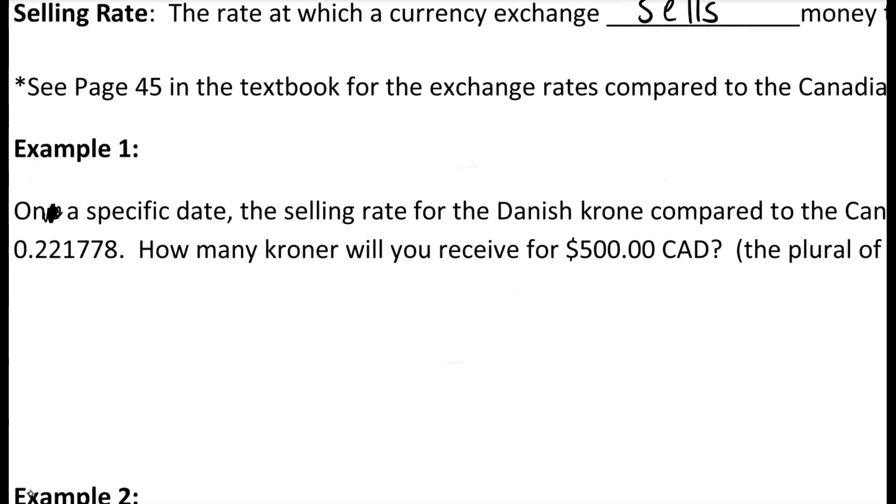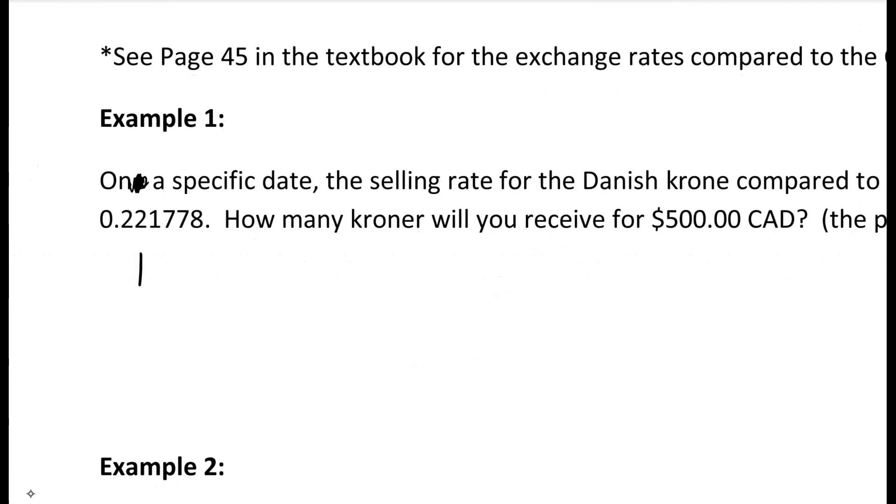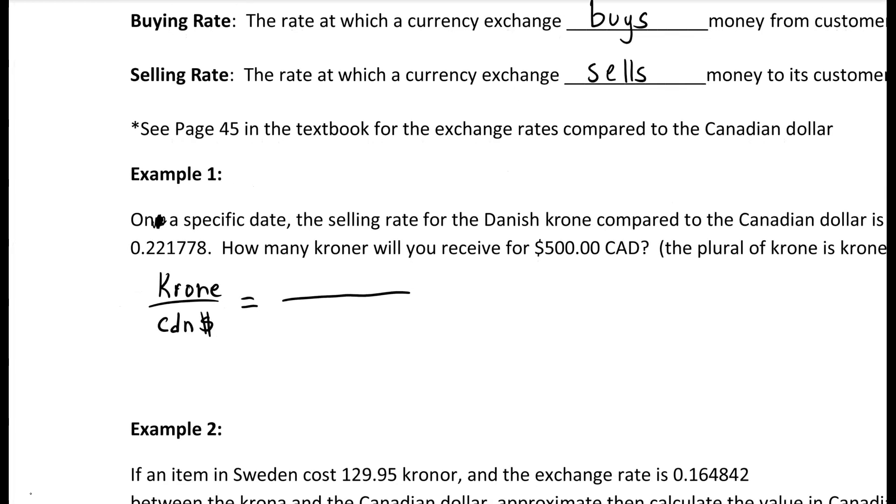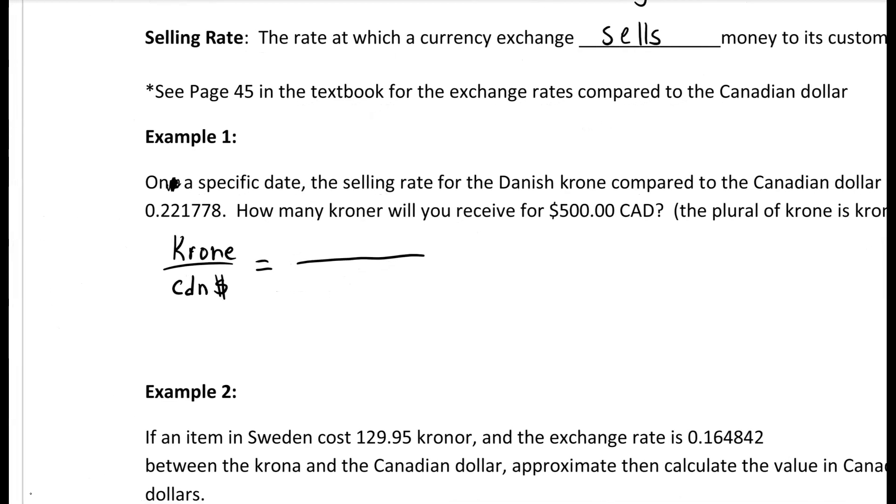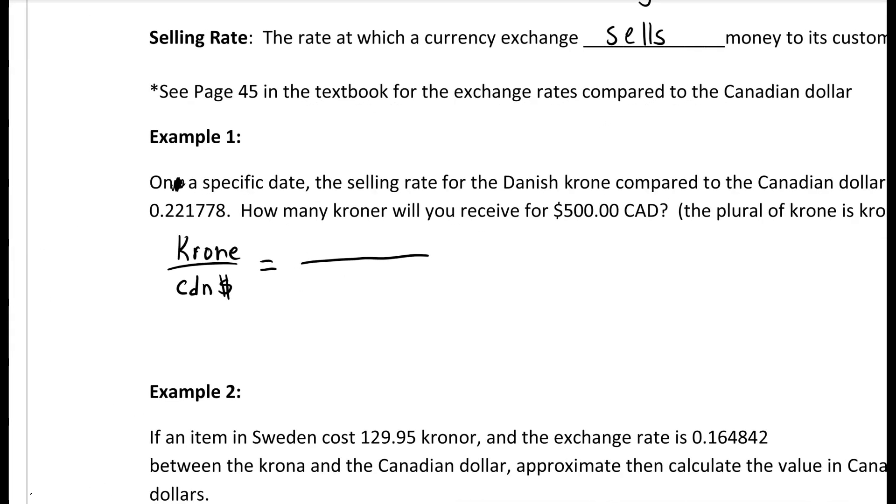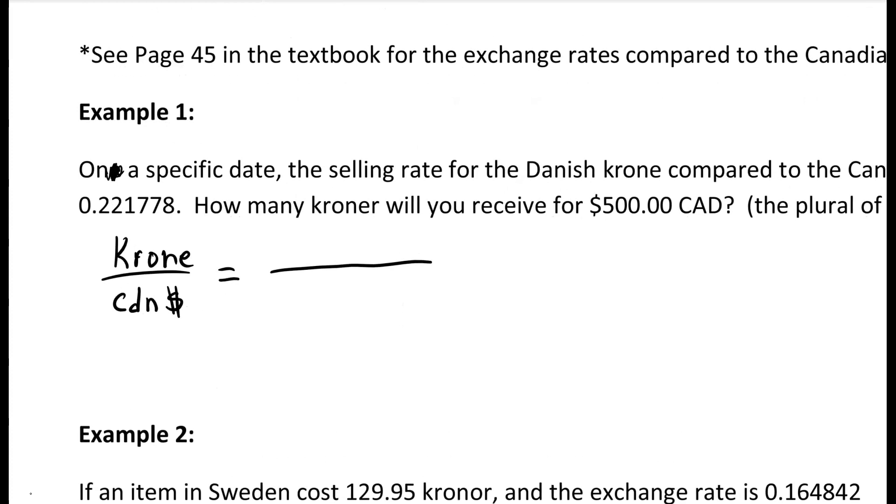What we have to look at first is setting up our fraction. So we have krone on top and Canadian dollars on the bottom. If we look at the exchange rate listed above, when compared to the Canadian dollar the krone is 0.221778. So that means for one Canadian dollar we're at 0.221778. We're starting to set up our fractions here.